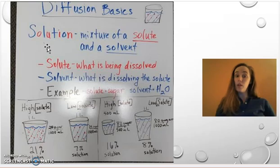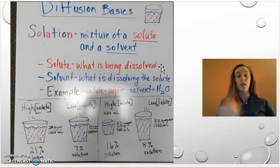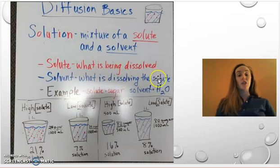Now we need to define what those are. A solute is what is being dissolved. In our case from the last slide, that's going to be the sugar. A solvent is the thing that's actually doing the dissolving. So in our example, that's going to be water.